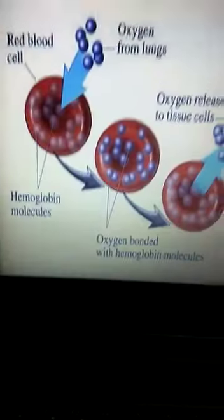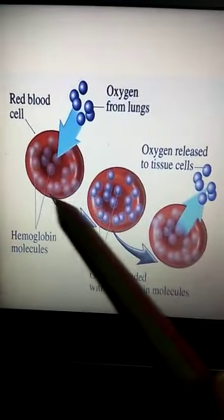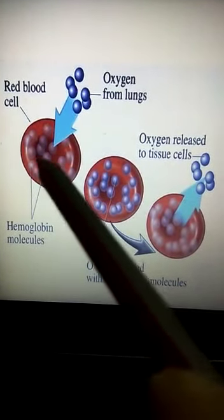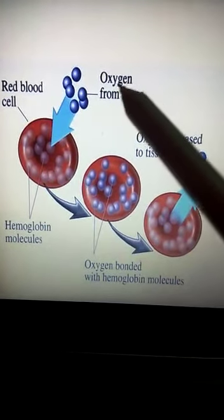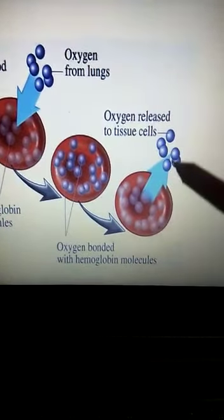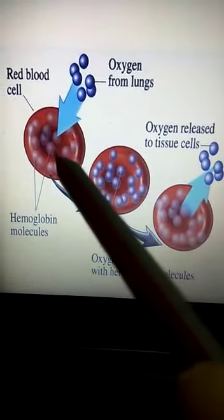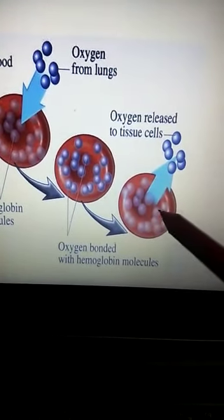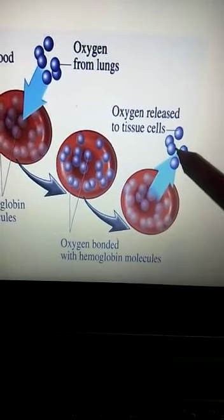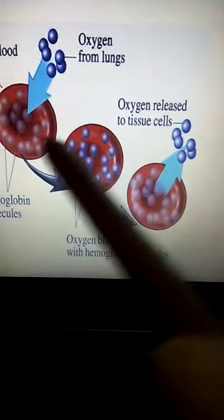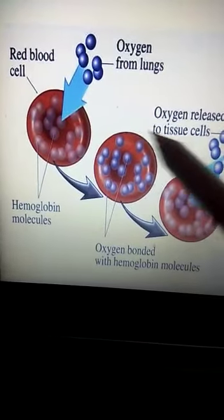This diagram shows how red blood cells, containing hemoglobin molecules, help carry oxygen to different tissue cells. They reach the tissue cells, release all the oxygen into the tissue, and then continue carrying oxygen further inside the body.